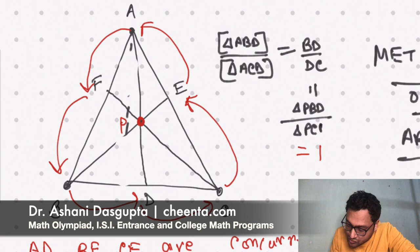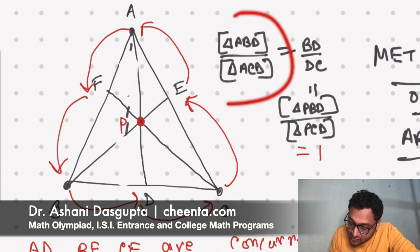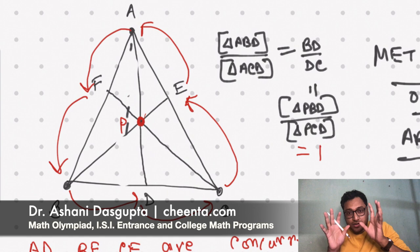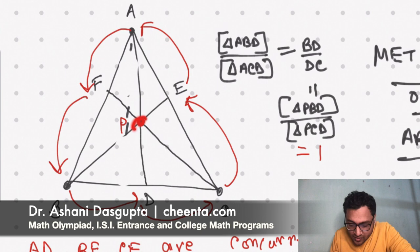So the ratio of these two is also BD by DC. The ratio of PBD and PCD is also BD by DC. PBD and PCD, so the ratio of PBD and PCD is also BD by DC, the same reason. P is the vertex, both of them shared the same vertex, and the bases are on the same straight line.